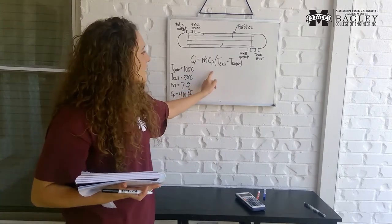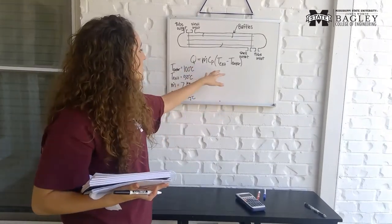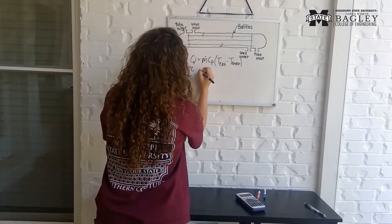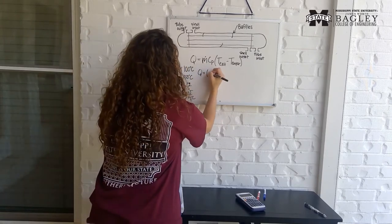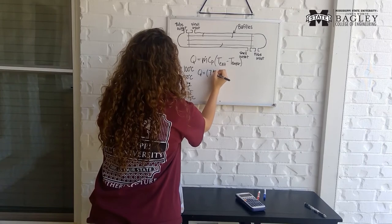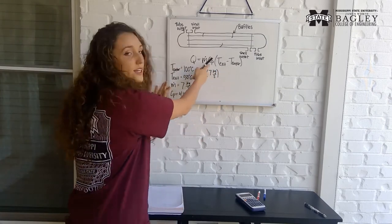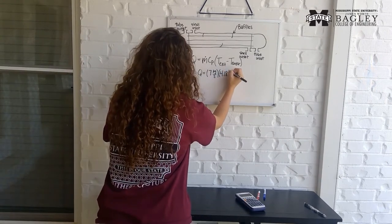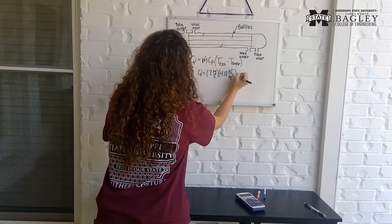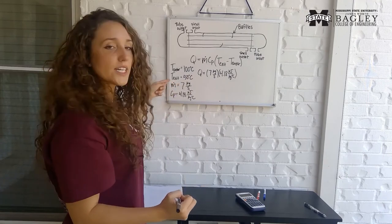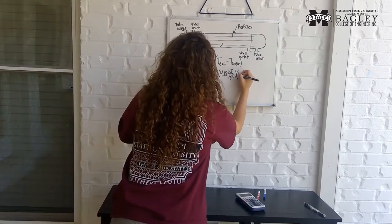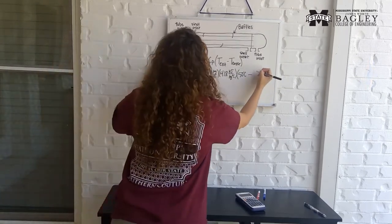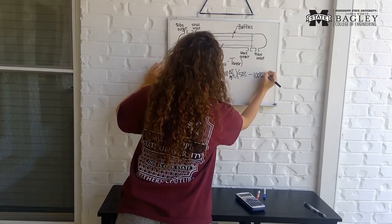So we have each component here in the equation defined. All we need to do is plug these values in to solve for Q or the heat transfer rate. So I'm going to go ahead and plug these in and say Q is equal to m dot here, which is seven kilograms per second. Then we're going to plug in our specific heat value here times 4.18 kilojoules per kilogram degrees Celsius. And then our exit temperature here is 50 degrees Celsius and subtract out your T enter, 100 degrees Celsius.